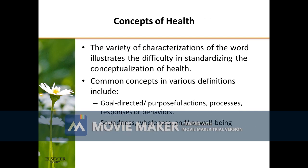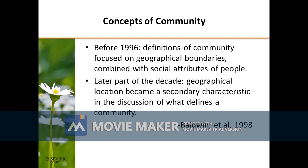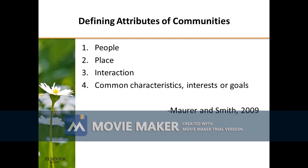The concepts of health include a variety of characterizations that illustrate the difficulty in standardizing the conceptualization of health. Common concepts of health are goal-oriented, soundness, wholeness, and others. Before, community health focused on geographical boundaries with the people's social attributes. On the later part of the decade, geographical location became a secondary characteristic when defining community. According to Moorer and Smith, communities have different attributes: the people, place, interaction, and common characteristics, interest, or goals.